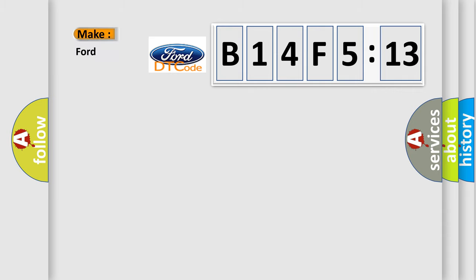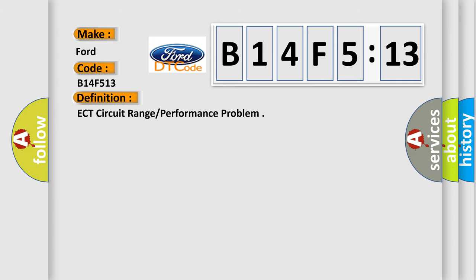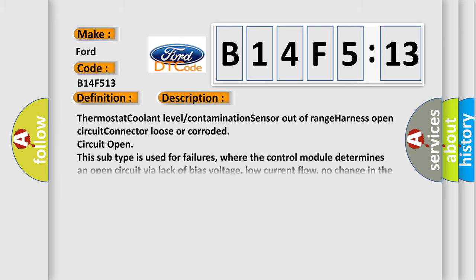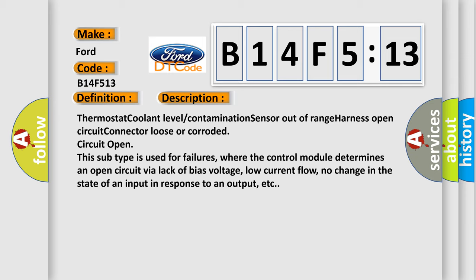The number itself does not make sense to us if we cannot assign information about what it actually expresses. So, what does the diagnostic trouble code B14F513 interpret specifically? It applies to Infinity car manufacturers. The basic definition is ECT circuit range or performance problem. A short description of this DTC code includes: thermostat, coolant level, contamination, sensor out of range, harness open circuit, connector loose or corroded, circuit open. This subtype is used for failures where the control module determines an open circuit via lack of bias voltage, low current flow, or no change in the state of an input in response to an output.